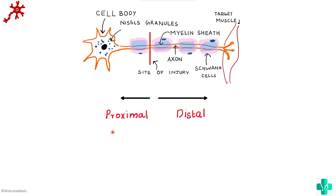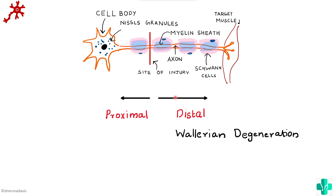The changes that occur distal to the site of injury include axon swelling and the myelin sheath also swells up and can later be converted to fat droplets. These are known as myelin beads, and all the extra myelin fat degeneration will eventually be engulfed by phagocytic cells.